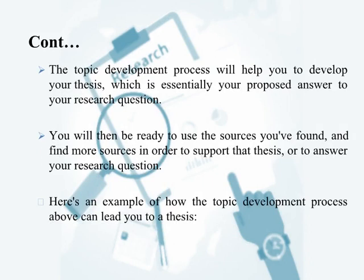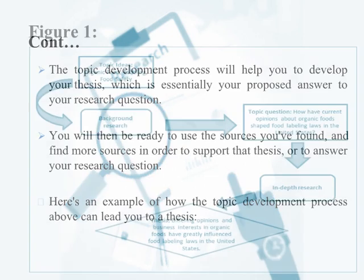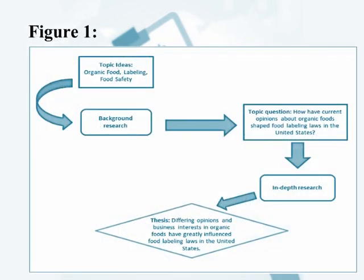The topic development process will help you develop your thesis, which is essentially your proposed answer to your research question. You will then be ready to use the sources you've found and find more sources to support that thesis or answer your research question. In Figure 1, topic ideas such as organic food, labelling, and food safety lead to background research, which leads to a research topic question, and after in-depth research leads to writing the thesis.